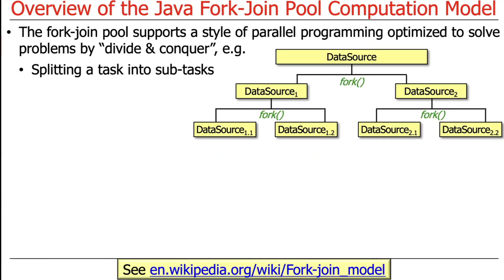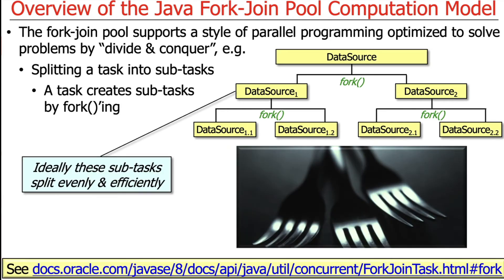In terms of how things work with Java and the ForkJoin Framework, the Fork method — which we'll talk about in great detail — is used to split the overall task into subtasks. You start with some source of data and then fork it into a bunch of subtasks by calling the Fork method. If you're doing things correctly, you want to be able to split the original data source into subtasks evenly and efficiently, which is really important.